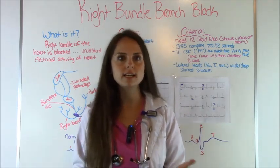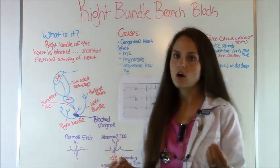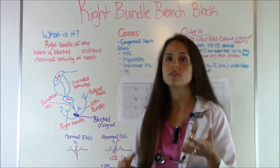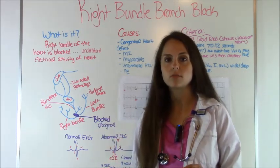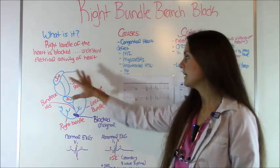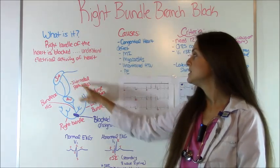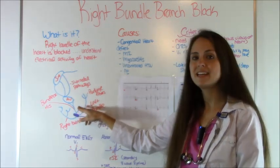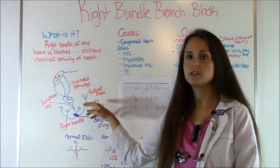A right bundle branch block is when the electrical system of the heart in the right bundle is blocked. In order to understand this you have to know how the electrical conduction system of the heart works. I have a video where I go over this extensively with a quiz if you want to watch that. Quickly: the impulse starts in your SA node, shoots down through your internodal pathways to the AV node, down through the bundle of His, then branches off into your right bundle and your left bundle down through the Purkinje fibers.